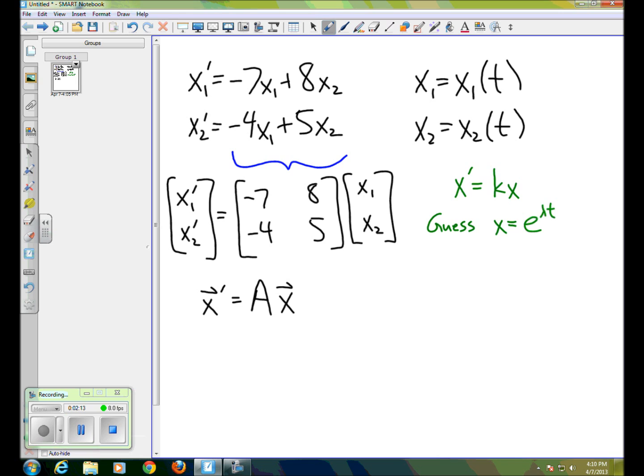Well, if that were the case, then x prime would be lambda e to the lambda t, which would be lambda x, because e to the lambda t is x. And so what that would mean is that lambda would have to equal the value k. So our solution would be x equals e to the kt.